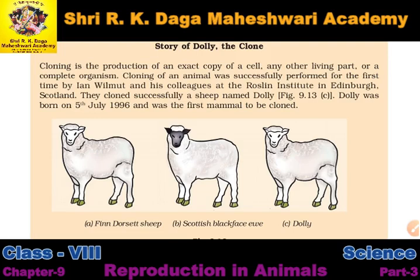They successfully cloned a sheep named Dolly. Dolly was born on 5th July 1996 and was the first mammal to be cloned. During the process of cloning Dolly, a cell was collected from the mammary gland of a female Finn Dorset sheep.